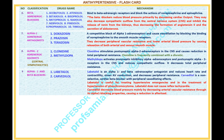Number 9: Alpha-1 and beta blockers. Drugs: 1. Labetalol, 2. Carvedilol. Mechanism: Labetalol is an alpha-1 and beta-adrenoceptor antagonist that reduces heart rate and contractility, slows AV conduction, and decreases peripheral resistance. Carvedilol is a non-selective cardiac beta blocker with peripheral vasodilating effects. Labetalol is useful for treating hypertensive emergencies and hypertension of pheochromocytoma, and does not cause reflex tachycardia. Carvedilol decreases blood pressure mainly by decreasing arterial vascular resistance through its alpha-1 blocking properties, causing a reduction in afterload.